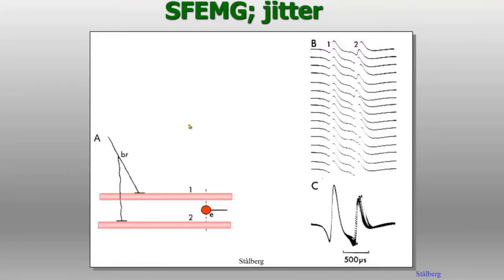Here is the principle of jitter recording. This is one axon that divides into two branches and connects to motor end plates. The electrode is inserted in the muscle so that activity from two muscle fibers from the same motor unit can be recorded. There is a delay between the two signals depending on the position of the motor end plates and the individual conduction velocity of the muscle fibers. At consecutive discharges this looks quite constant.